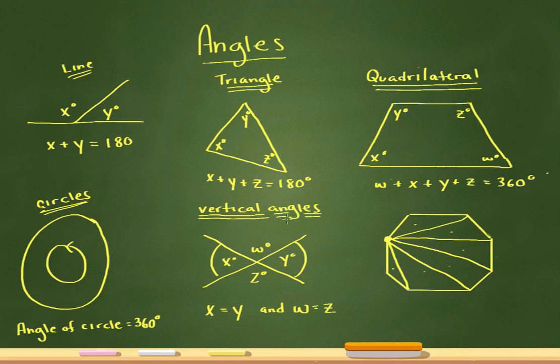And the last thing you have to know is vertical angles. So vertical angles are the angles that are created when two lines cross each other in an X. And vertical angles, in particular, are the ones that are across from each other. So in this case, X and Y will be vertical angles. They're across from each other. And W and Z will be vertical angles because those are across from each other.